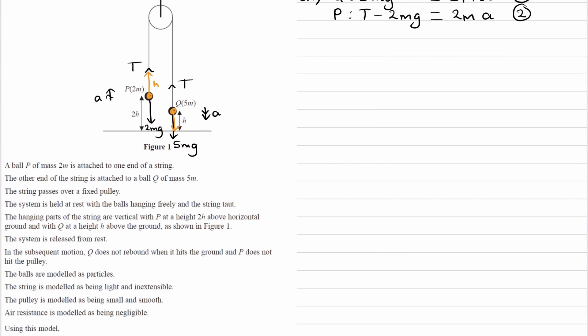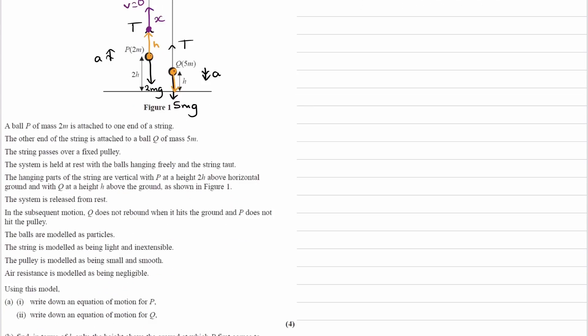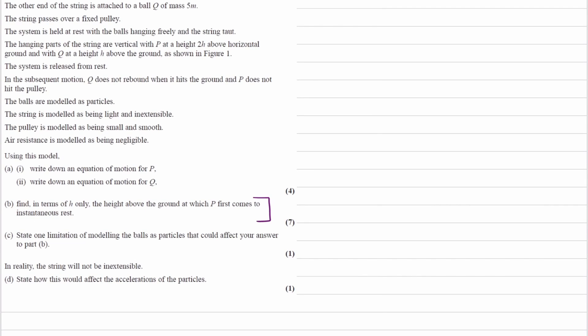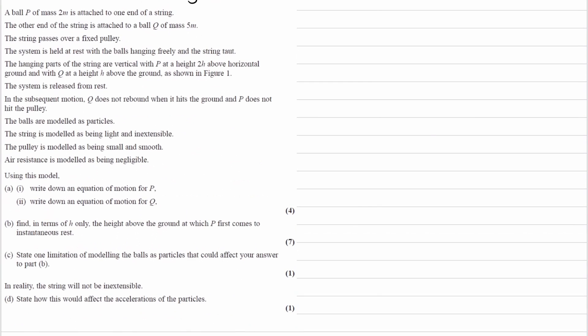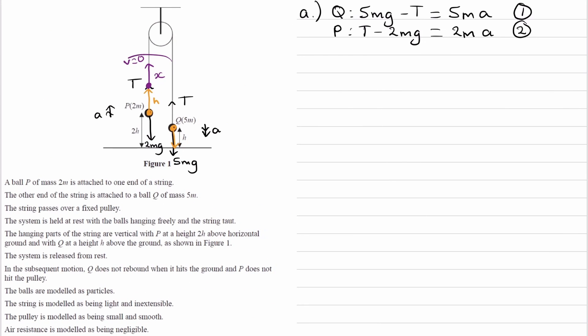And then our second stage would be, now that Q has hit the ground, P still has some velocity, it has momentum. It will then move upwards, let's say a distance of X, until eventually the speed is zero. And we're trying to work out what is the height above the ground of P when it first comes to rest. So we're trying to work out what is 2H plus H plus X. We want our answer to be in terms of H. That's what it says in the question, give it in terms of H. So then we want to work out what X is equal to.